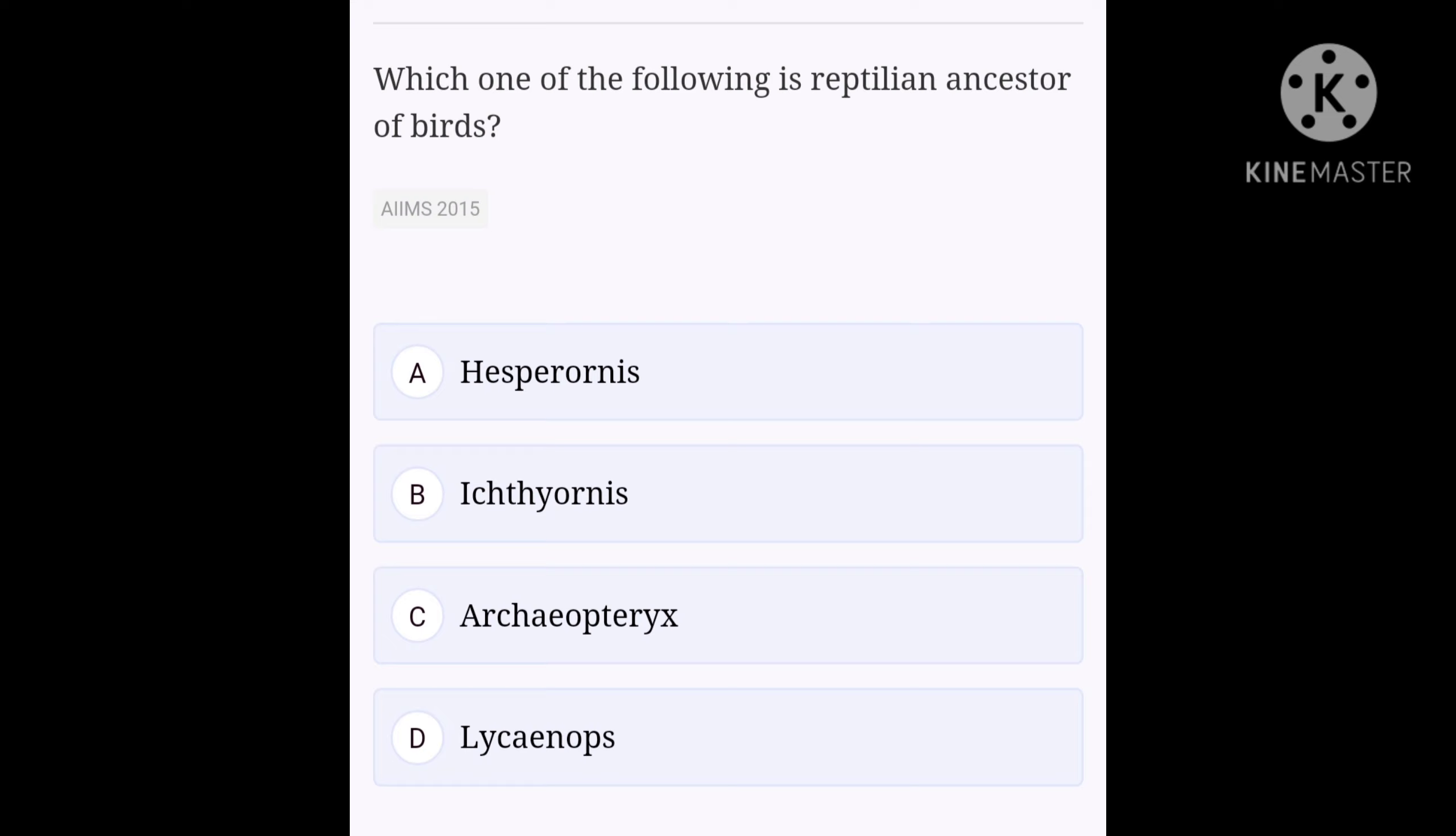The first fossil bird found in the rocks of the Jurassic period belonged to genera Archaeopteryx and Archaeornis. These are considered as reptilian ancestors of birds. It was about the size of a crow and possessed feathers and wings, but had a long reptilian tail very much unlike the modern birds, and a toothed beak. Fossils of Hesperornis, an aquatic diving bird, and Ichthyornis, a powerful flying bird, have been found from the Cretaceous. So the correct answer is C, Archaeopteryx.